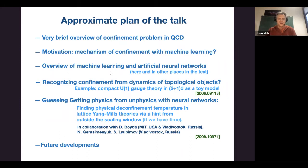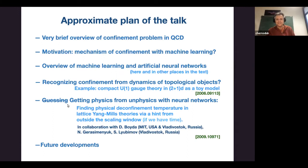After that, I will speak about a specific model where everything is understood both analytically and numerically, so we can use it to test machine learning — to understand how neural networks can be applied and what we can get from them. Then I will move to the domain of unknowns, getting physics from realistic simulations — first-principle simulations where we have data we trust and want to understand.